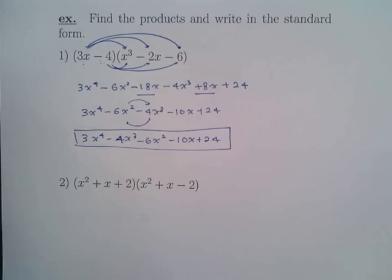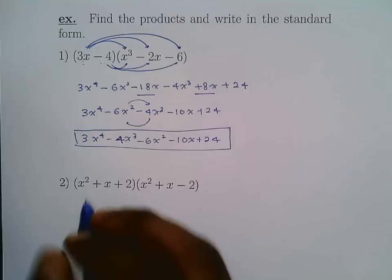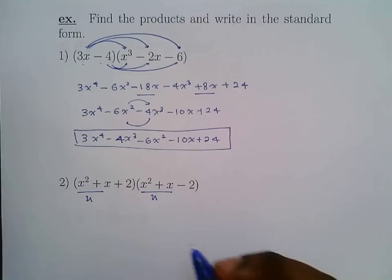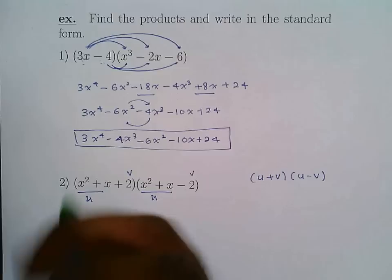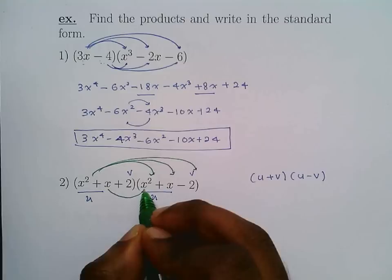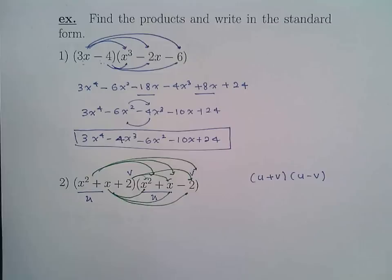The second example is quite similar, but notice that if you set u and v appropriately you get something like (u + v)(u - v). If you didn't notice that and just multiplied everything out, you'd be multiplying nine separate combinations, which is not the easiest way — it works but it's not optimal.